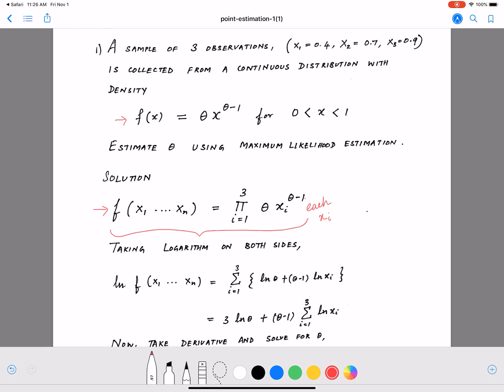When we have a product, we can make it easier when computing maximum likelihood by using logarithm. We take logarithm on both sides, then we get ln f(x1 to xn) equals sigma i equals 1 to 3. The product becomes a sum, a summation. The log goes inside, so ln theta xi theta minus 1. It's a product again, so it becomes ln theta plus theta minus 1 ln xi. From just taking logarithm, we have split this into a sum rather than a product.